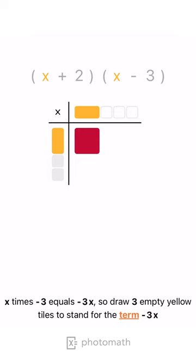X times negative 3 equals negative 3X, so draw three empty yellow tiles to stand for the term negative 3X.